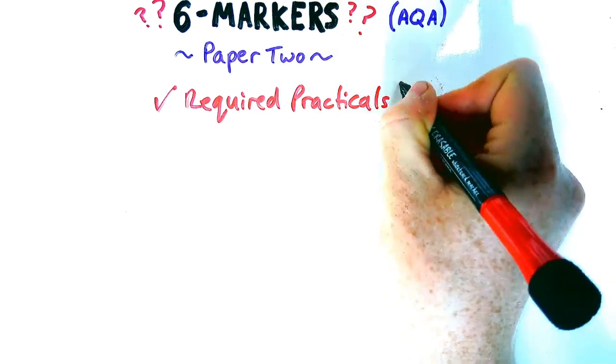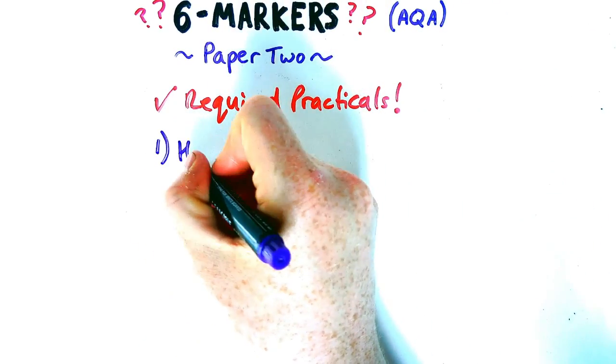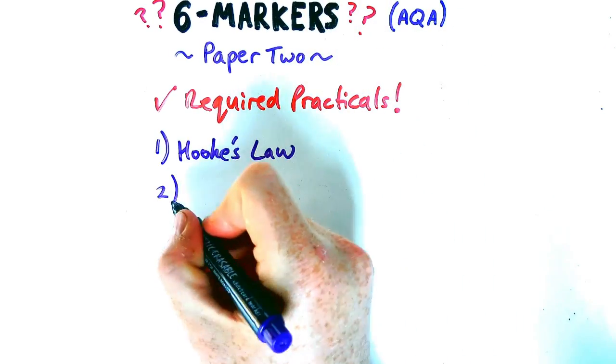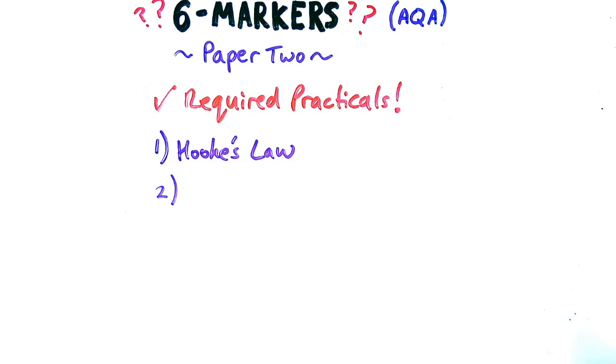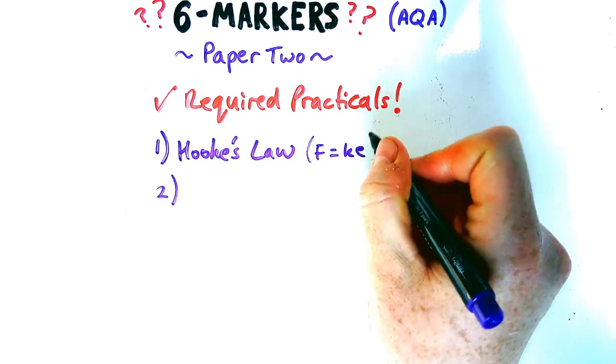Now, just like for Paper 1, if you do separate science, you're highly likely to get at least one question about a required practical. Combined science, you could definitely get one as well. So for Paper 2, the required practicals you need to know are as follows.